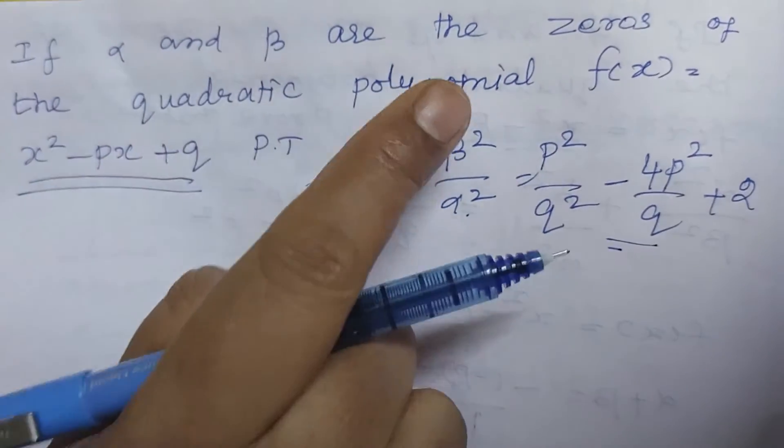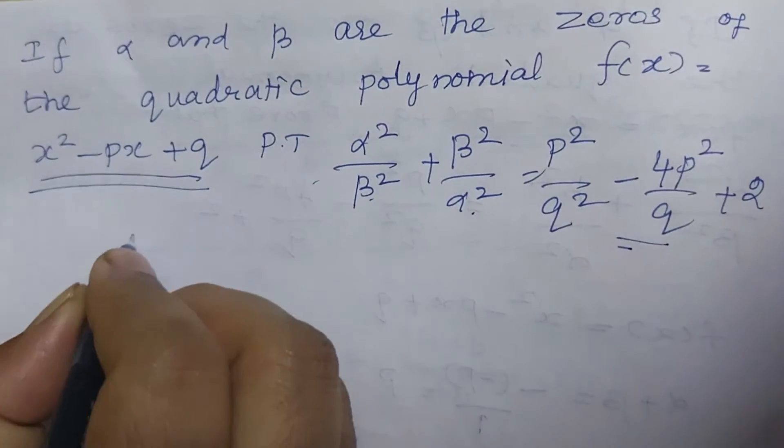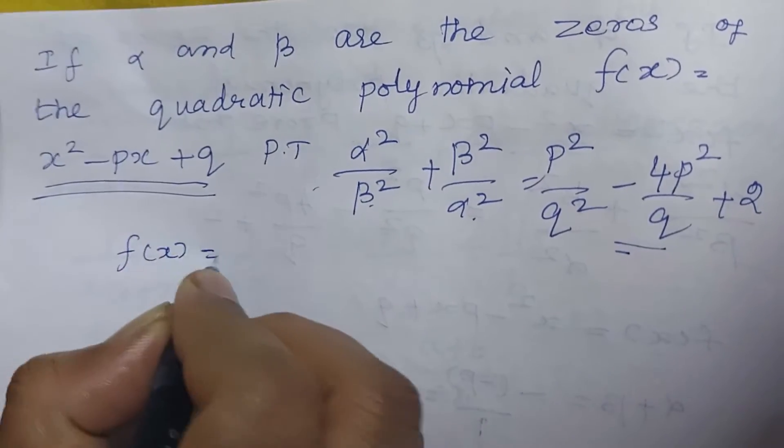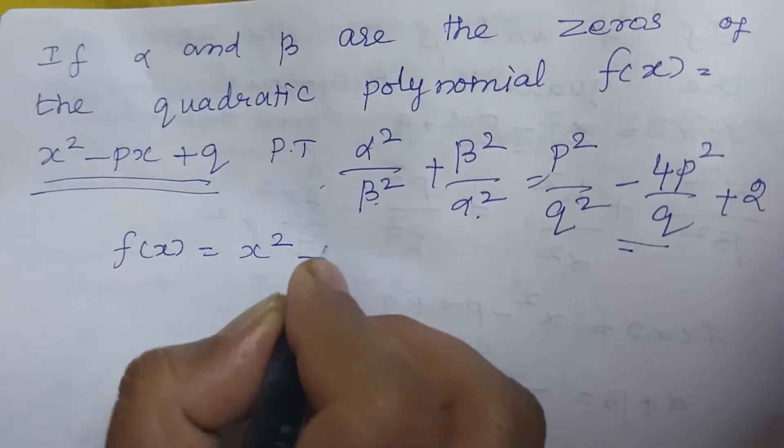Here alpha and beta are the zeros of the quadratic polynomial. So what is f of x? f of x equal to x square minus px plus q.